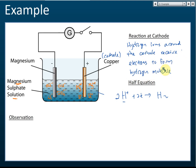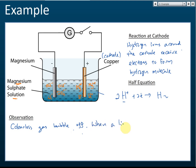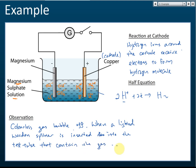Hydrogen ions around the cathode receive electrons to form hydrogen molecules: 2H⁺ + 2e⁻ → H₂. Hydrogen gas is in the gaseous state at room temperature. For the observations, write: a colorless gas bubbles off — you cannot say 'hydrogen gas is released' as that is not an observation. You must also suggest a test to identify the gas: when a lighted wooden splinter is inserted into the test tube containing the gas, a pop sound is produced.